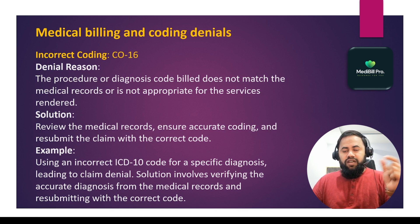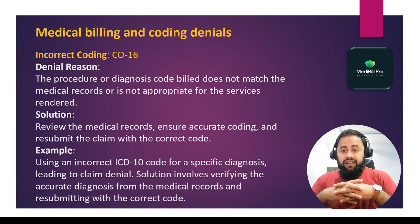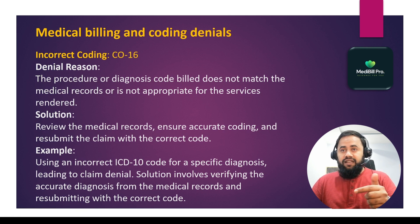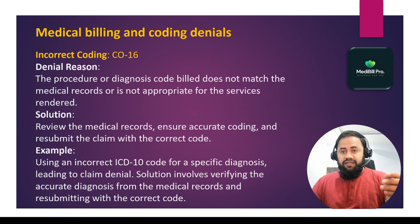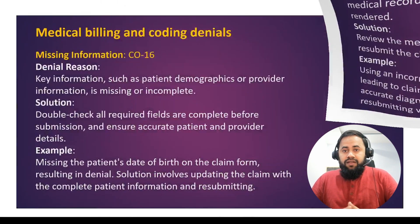Simply, if the procedure code or the diagnosis code does not match, the insurance denies the claim. The reason code used is CO16. To fix it, you review the medical records, find the reason for the incorrect code, rectify it, and resubmit the corrected claim.